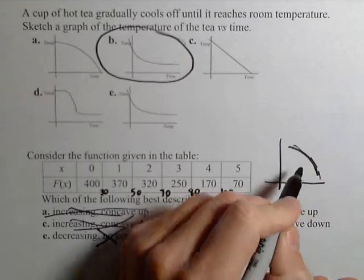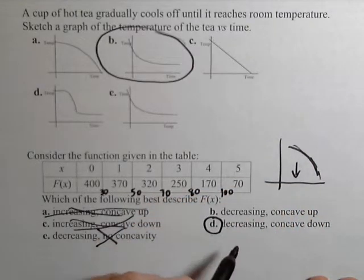So what we have is decreasing and concave down. We can see the concave down from the graph because it opens downwards. And it has a decreasing rate of change.